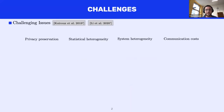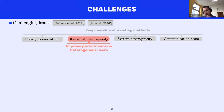This framework brings many challenges related to privacy preservation, statistical heterogeneity between devices, system heterogeneity between devices, and communication costs. We are going to focus on a particular one, which is statistical heterogeneity. Our goal is to improve the performance of a model on statistically heterogeneous frameworks without harming the benefits of existing methods with respect to other challenges.